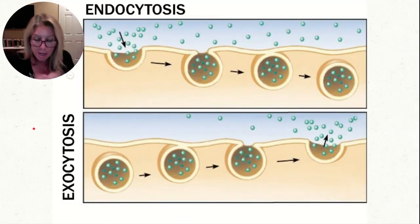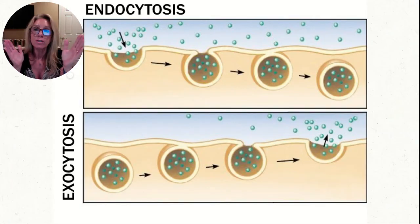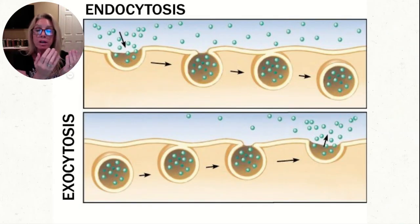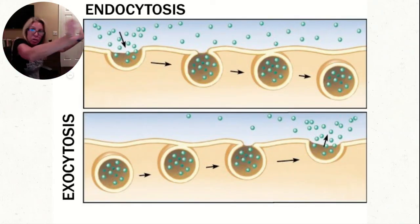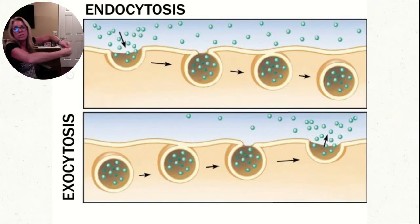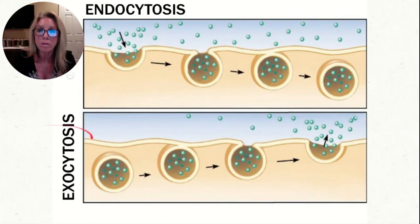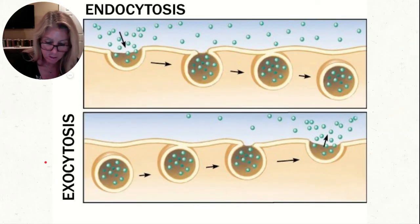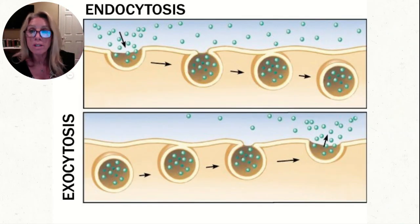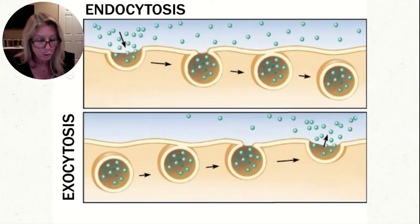Bulk transport — your options are through the phospholipid bilayer, using a channel or carrier passively, using a carrier actively requiring ATP, or using whole membrane. When you engulf something it's called endocytosis, and there are different categories. When you bring a vesicle to the edge of the cell and release it outside, that's exocytosis. Endocytosis in, exocytosis out. Exocytosis: a vesicle formed by the Golgi apparatus fuses with the plasma membrane to secrete substances such as hormones, neurotransmitters, and enzymes.